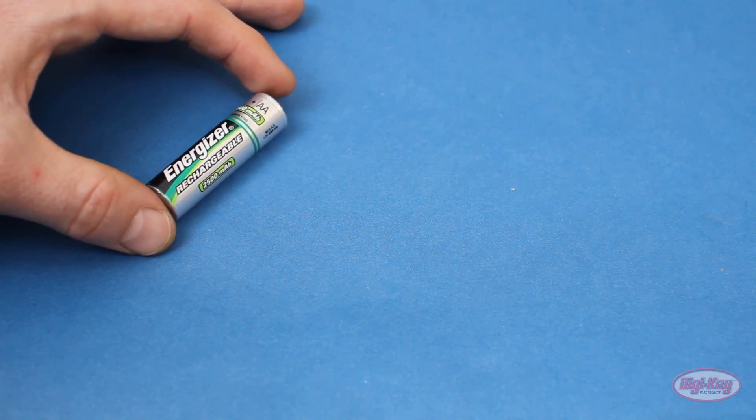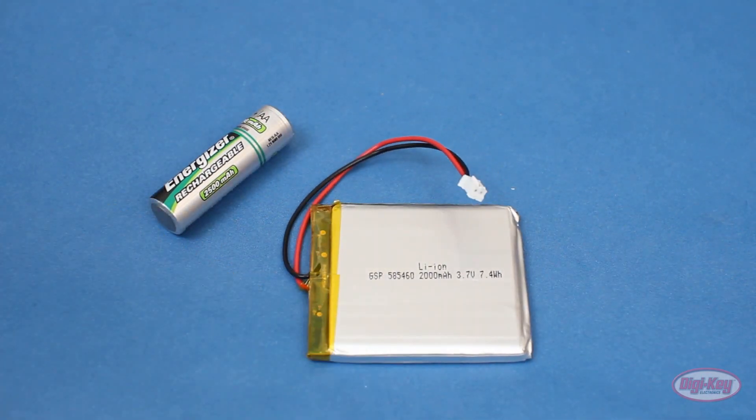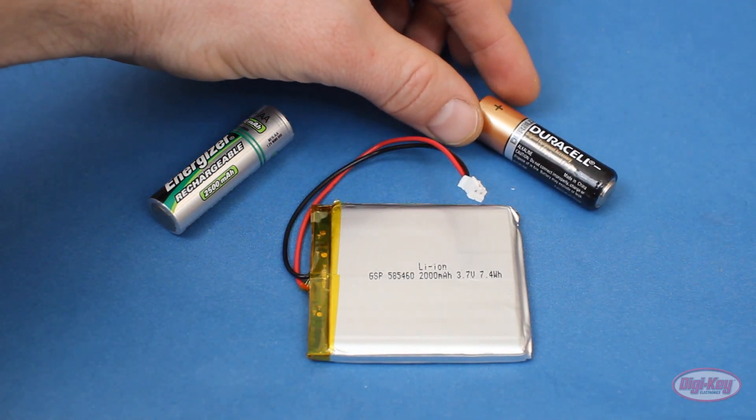This is because different manufacturers use different processes when making the batteries, and a variety of factors, like temperature and current draw, will ultimately affect how long a battery lasts. You can find batteries in all sorts of chemistries, like lead acid, nickel metal hydride, and lithium polymer, but we'll stick with the simple non-rechargeable alkaline cells in this episode.